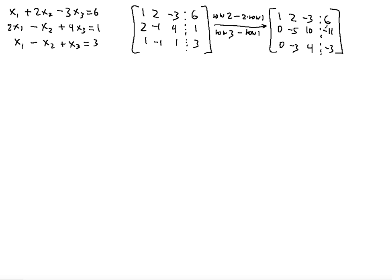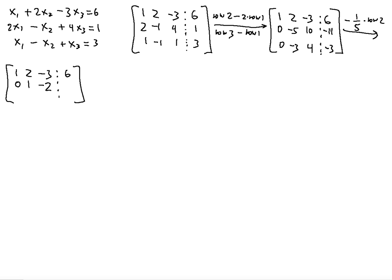We multiply row 2 by negative 1 over 5. The first and last rows stay the same. We get 0 in the first position. Negative 5 times negative 1 over 5 gives exactly 1 as we wanted. 10 times negative 1 over 5 is negative 2. Two negatives make positive, so we get 11 over 5. Then we copy the third row down: 0, negative 3, 4, negative 3.